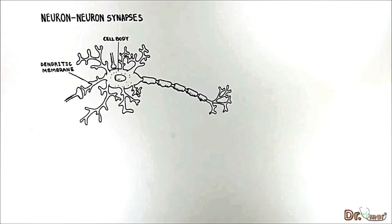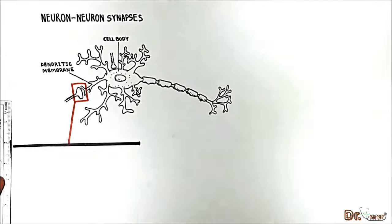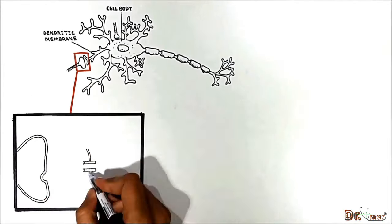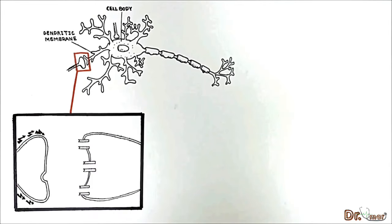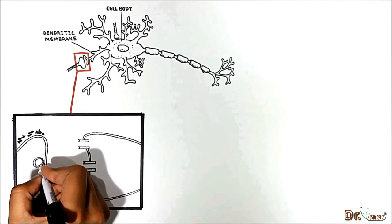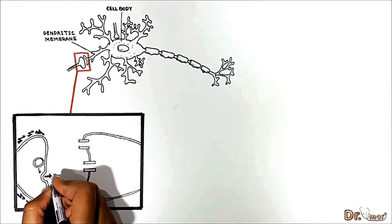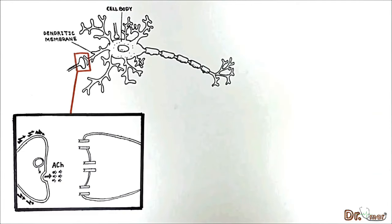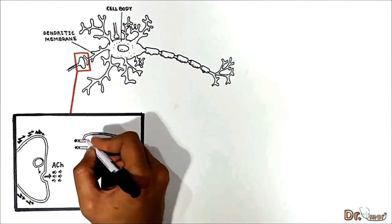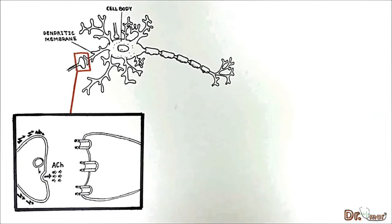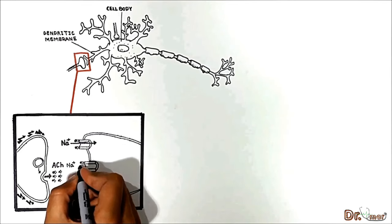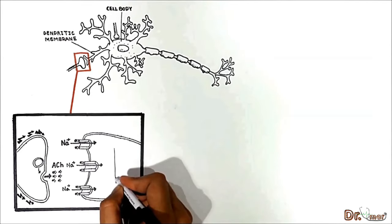We will see how an action potential transmits from one neuron to another. Zooming in on a single dendritic synaptic point: the action potential comes and depolarizes the pre-synaptic membrane, the vesicles release their content into the synaptic cleft. Suppose it releases acetylcholine — this neurotransmitter binds with its receptor and opens channels, increasing sodium and potassium conductance. Because the net force on sodium is greater than the net force on potassium, the main current flowing is sodium influx.